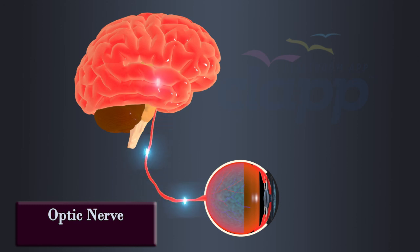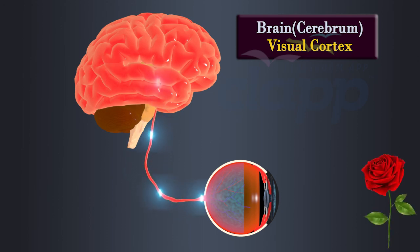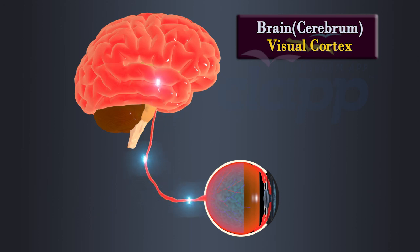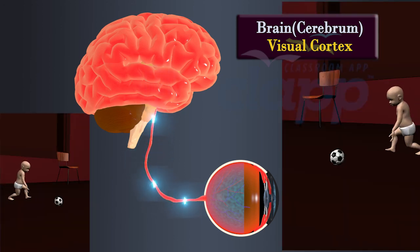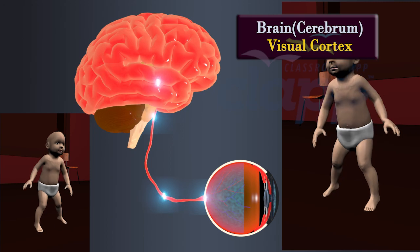Where it is interpreted as visual perception. The brain processes the electrical signals received from the optic nerve and combines them to create a coherent and meaningful visual image. The visual cortex analyzes various aspects of the visual input such as color, shape, motion, and depth to form a perception of the world around us.